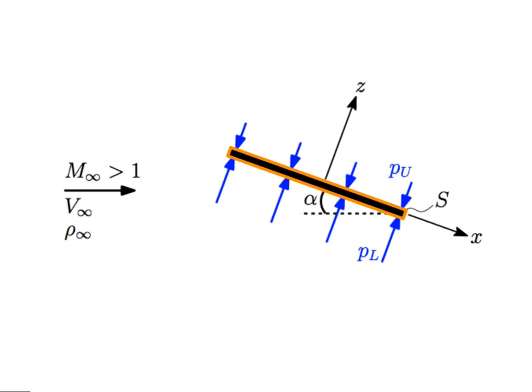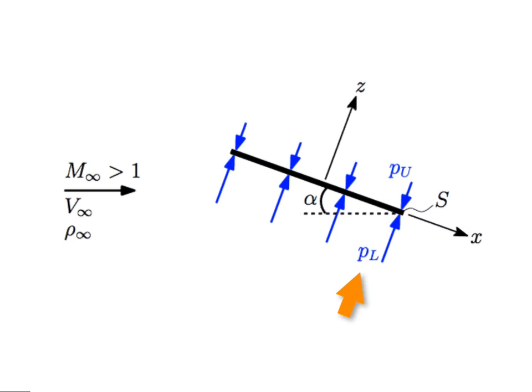Here's our problem. We have a flat plate in a supersonic flow, and we haven't learned anything about supersonic flows yet, but this one is one we can deal with. Assume that the angle of attack alpha that the plate is making with the free stream is small. The pressure on the lower surface is called PL, and the pressure on the upper surface is PU, and we assume both are uniform with PL larger than PU.